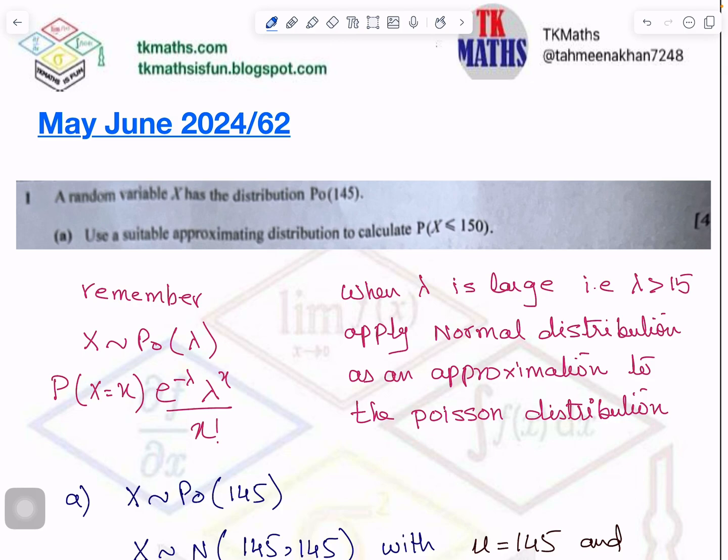This is question number 1, which is on Poisson distribution, and lambda is 145. You have to use approximate distribution to calculate probability of x less than or equal to 150. I have written here for you to recall that this is the formula for the Poisson distribution, but the question is saying use suitable approximation.